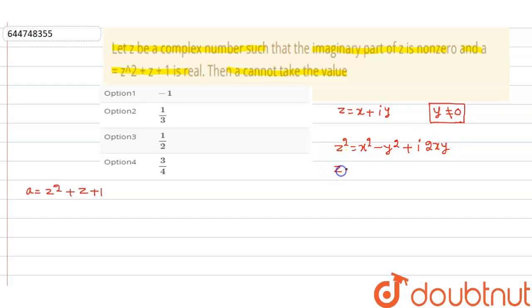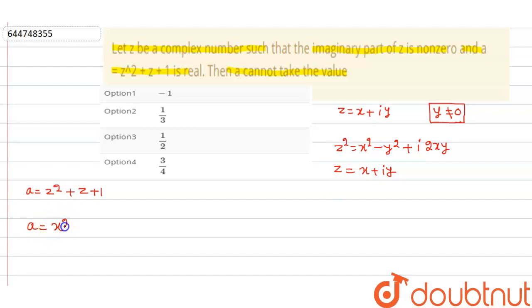And z is equal to x plus iota y as already supposed, plus one. Substituting the value, we get: z squared gives x squared minus y squared, plus x.